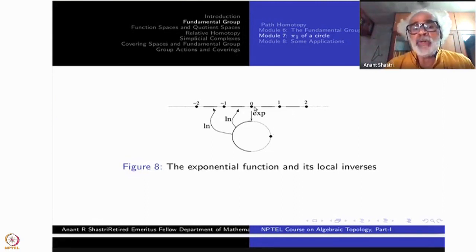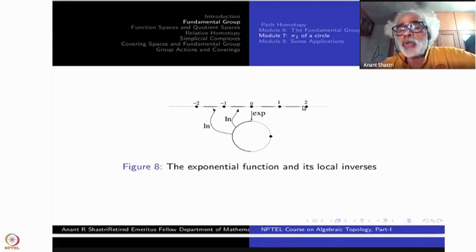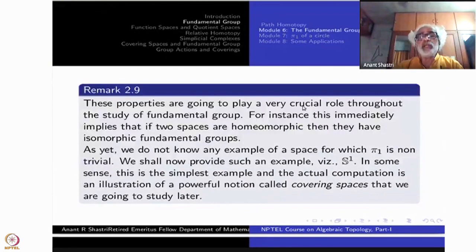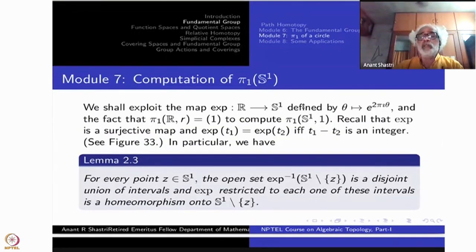It is injective restricted to any open interval of length less than 1. In particular 0 to 1 open interval it is injective. 1 and 0 go to the same point. You take any interval which is of length less than 1, then exponential map is injective because difference of any 2 members there is not going to be an integer. So this is the property of this function which will be exploited.